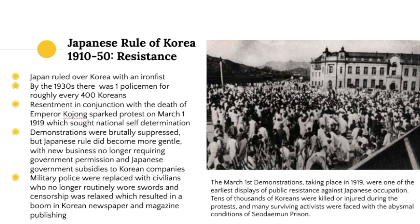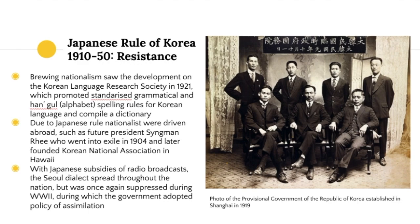Resentment, combined with the death of Emperor Kojong, sparked the March 1st 1919 protests, which sought national self-determination — one of the largest demonstrations of the period, though brutally suppressed. Japanese rule then became more gentle: new businesses no longer required government permission, subsidies to Korean companies were introduced, military police were replaced with civilians who no longer wore swords, and censorship was relaxed, resulting in a boom in Korean newspaper and magazine publishing.